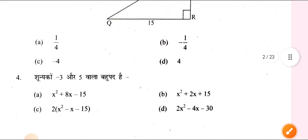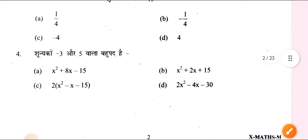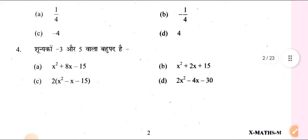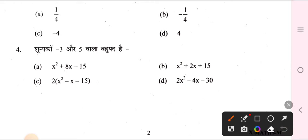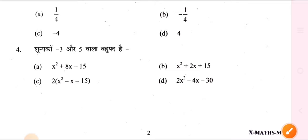Question number 4: the answer is minus 3 and 5. The correct option is A.